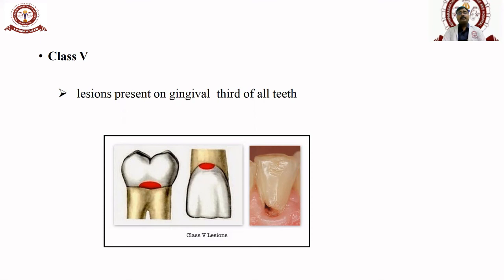Class V is seen in all teeth, mainly in the gingival third of the tooth — the region nearer to the gingiva. The best treatment for Class V is a gold restoration, followed by GIC, and then microhybrid composites, which are the basic good restorative materials for Class V.